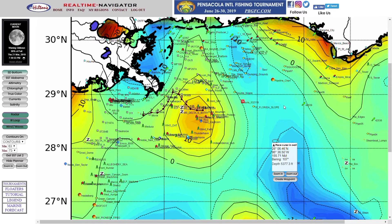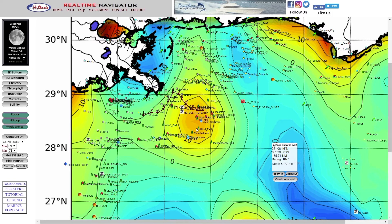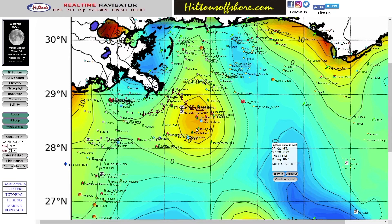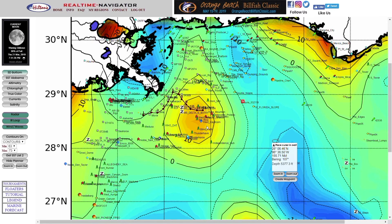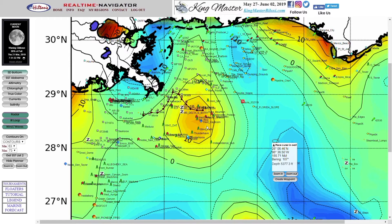We've gotten a lot of reports over the years: hey, I was over at this rig in some bad altimetry, but we caught some good tuna and marlin. That's because the bait didn't leave, so the predators didn't leave. When you're fishing open water rips, you better be paying attention to this imagery — it's very pertinent. If you're fishing the rigs, not so much. I wouldn't pay as much attention to the altimetry; I'd be looking at other parameters such as current and water color.